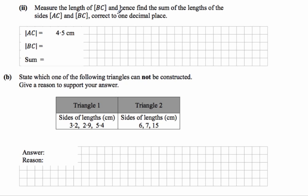Part 2 of A says measure the length of BC and hence find the sum of the lengths of the sides AC and BC correct to one decimal place.